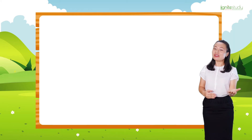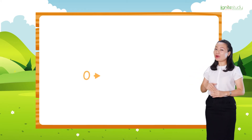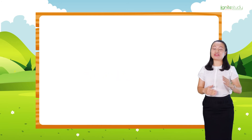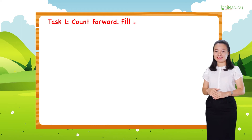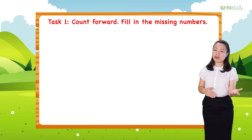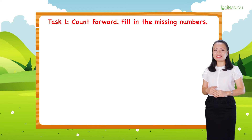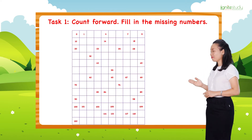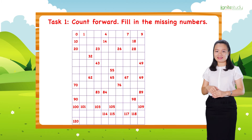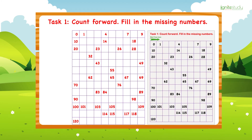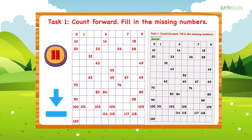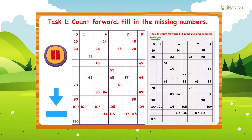Now you are able to count 0 to 120. Let's have some practice. Task 1: Count forward — find the missing numbers. I have a worksheet for you, so pause this video to download and print the worksheet. Then try to do it on your own. When you're finished, replay the video to continue.